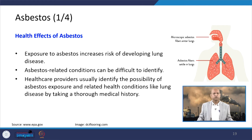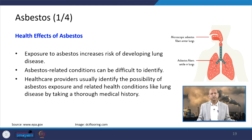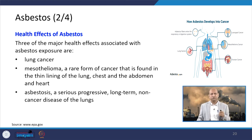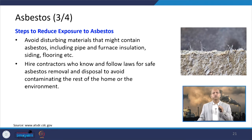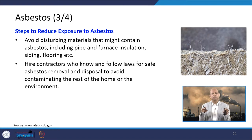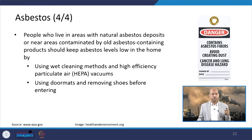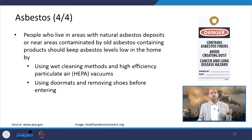Asbestos is available in several building materials and from soil exposure, and it can cause lung cancer — making asbestos exposure very problematic. To reduce exposure, we should not disturb materials that might contain asbestos, like pipes, furnace insulations, siding, and flooring. If disturbing them is needed, a proper contractor expert in handling asbestos should be used. People living near natural asbestos deposits or contaminated areas should keep asbestos levels low using various methods.